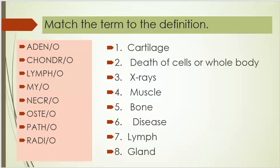The terms are: adeno, chondro, lympho, myo, necro, osteo, patho, and radio. Number one, cartilage. Number two, death of cells or whole body. Number three, x-rays. Number four, muscle. Number five, bone. Number six, disease.